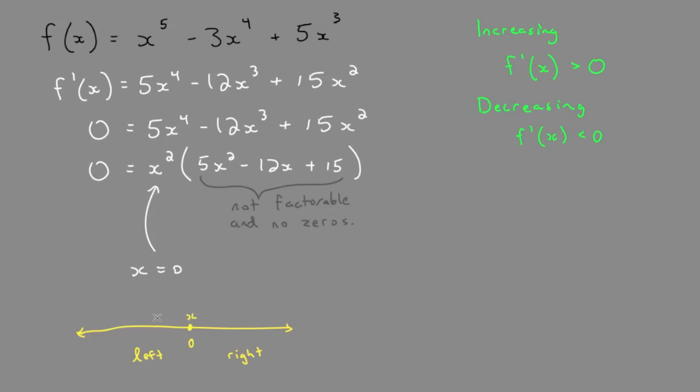So to do that, we just pick a point on either side of our stationary point, plug that in for x, and then we'll see if it's increasing or decreasing. So pick any point. Choosing the easiest points on either side of 0 will be negative 1 and positive 1.